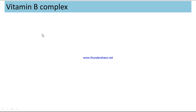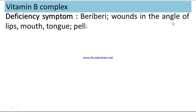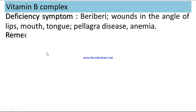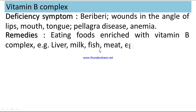Vitamin B complex — deficiency symptoms: cracks in the angle of lips, mouth, tongue, pellagra disease, anemia. Remedies: eating foods enriched with vitamin B complex, e.g., liver, milk, fish, meat, egg, cheese, kidney, etc.